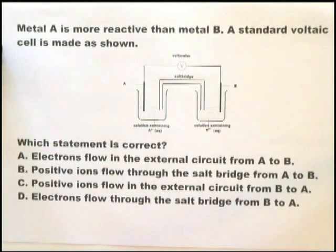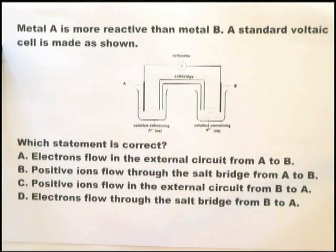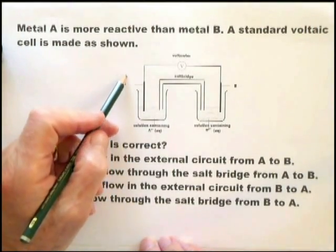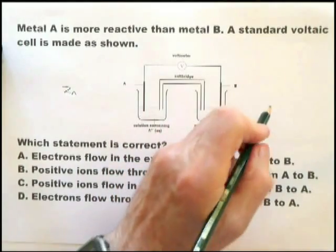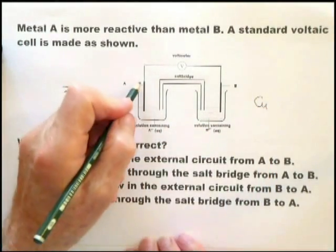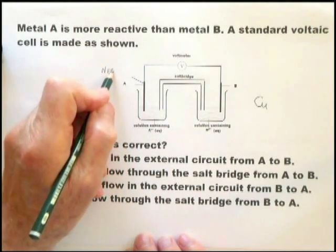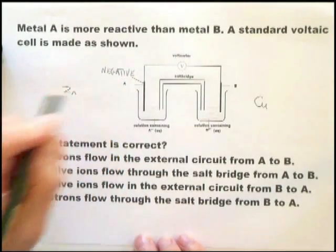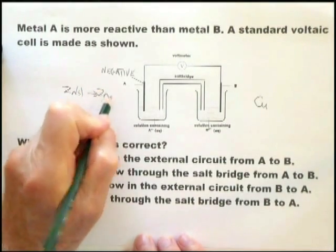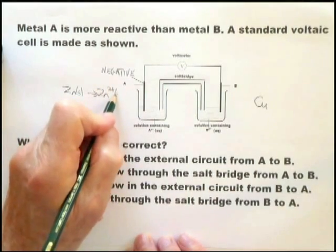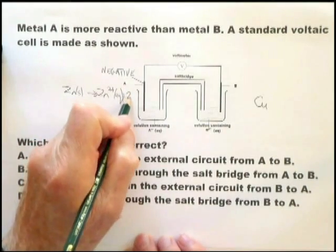When you come across a standard voltaic cell, there are a number of things you must remember. The first is that the most reactive metal will be the negative electrode. So if A is the most reactive metal — let's assume it's zinc — and the other metal, less reactive, is copper, zinc becomes the negative electrode. That's simply because zinc solid goes to Zn²⁺ aqueous, plus two electrons.